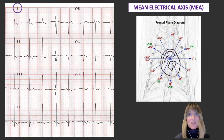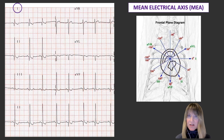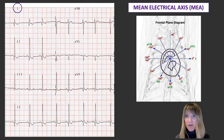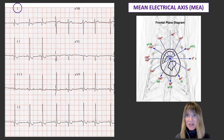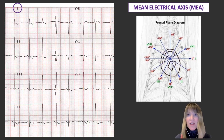Step two is to look at the frontal plane diagram and ask yourself which lead is perpendicular to the isoelectric lead. Looking at our frontal plane diagram, we can see lead one goes horizontally across the chest, and perpendicular to that is lead AVF, going from cranial to caudal. So AVF is our perpendicular lead.